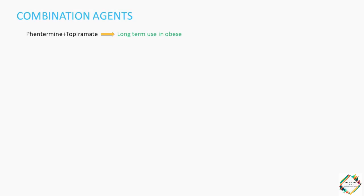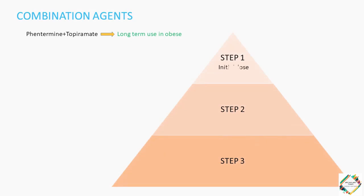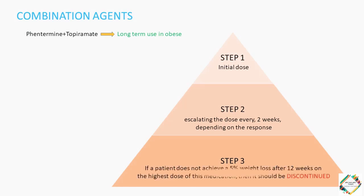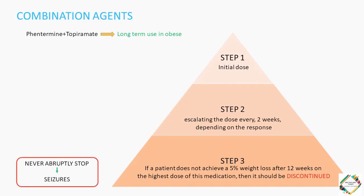When this combination of Phentermine and Topiramate is given to a patient, it is usually dosed in a stepwise process. First we give an initial dose, then we escalate the dose every 2 weeks depending on the response. If the patient does not achieve a 5% weight loss after 12 weeks on the highest dose, then it should be discontinued. Very importantly, this medication should not be stopped abruptly because this would precipitate seizures.